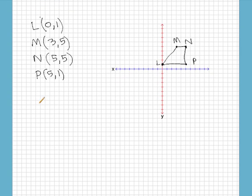Let's look at LP first. The distance LP from here to here is simply five. The distance from N to P is four. And the distance from M to N is two.